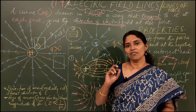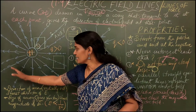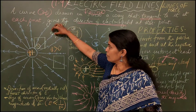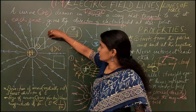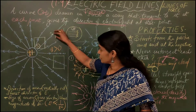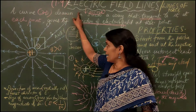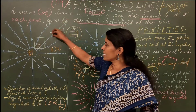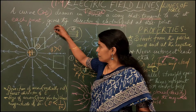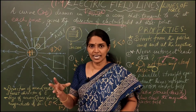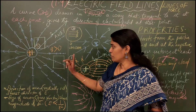One more thing: if you place a unit test positive charge somewhere in the electric field, since like charges repel, the test charge is pushed away from the positive charge. This again shows the electric field is directed radially outward. So another definition: an electric field line is the direction in which a unit test charge placed in the field tends to move.